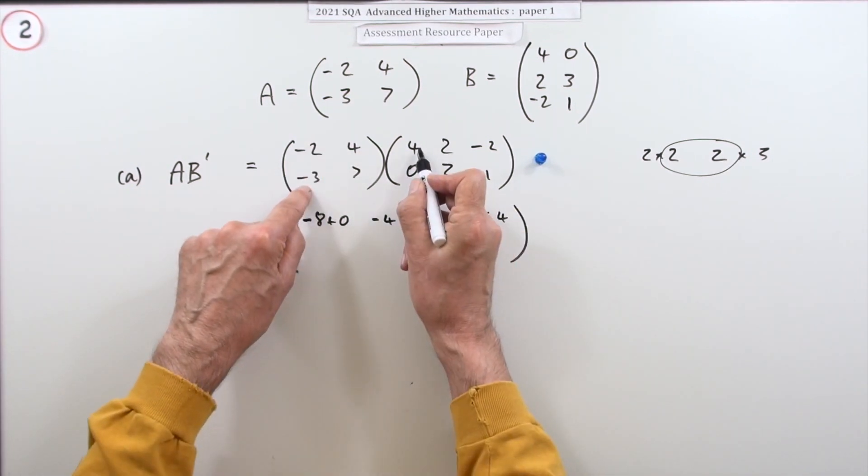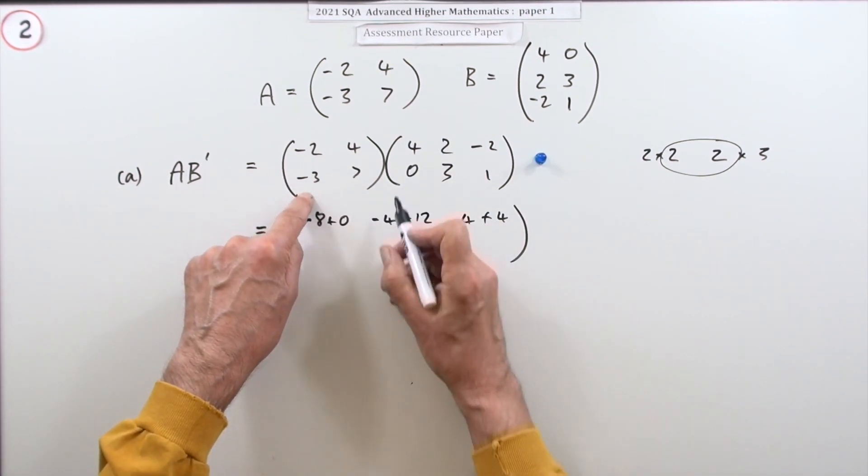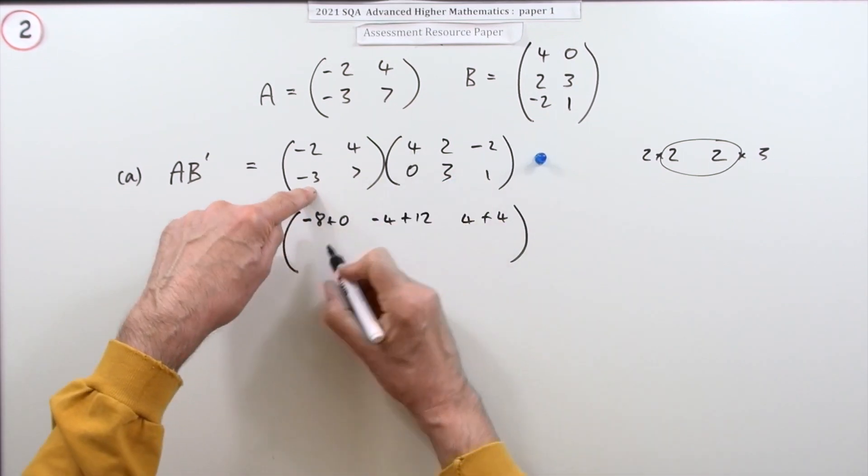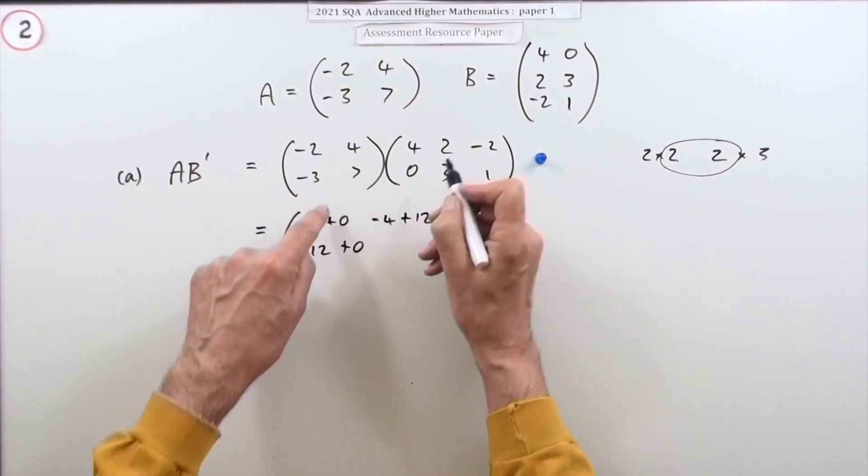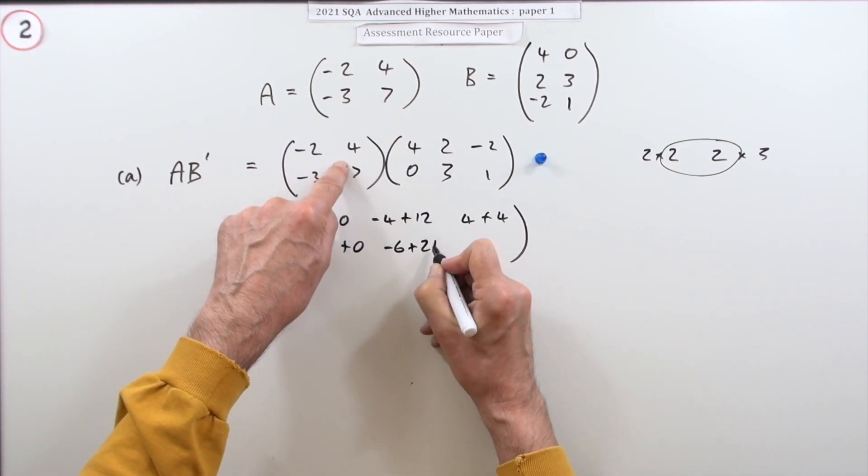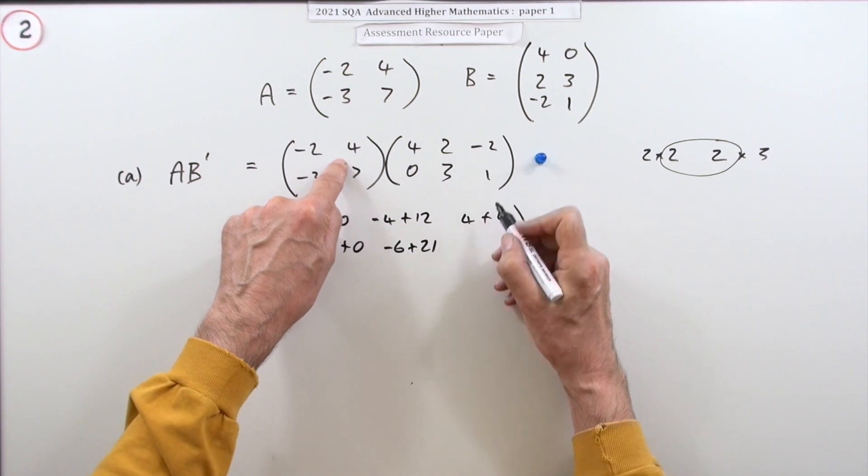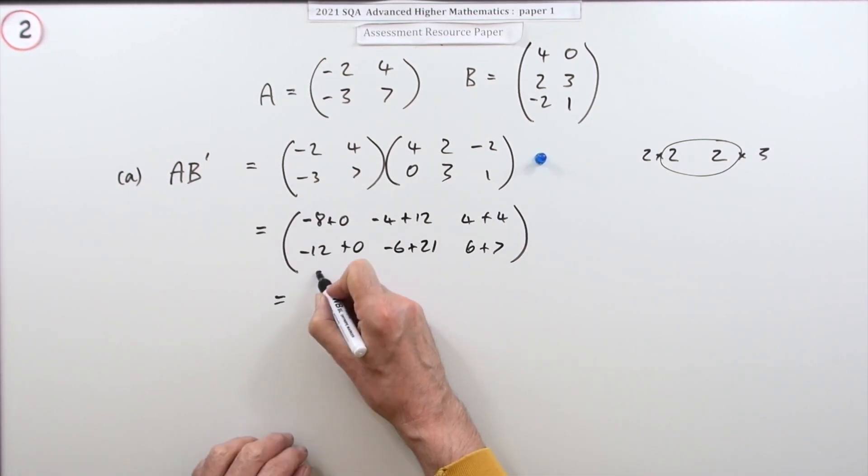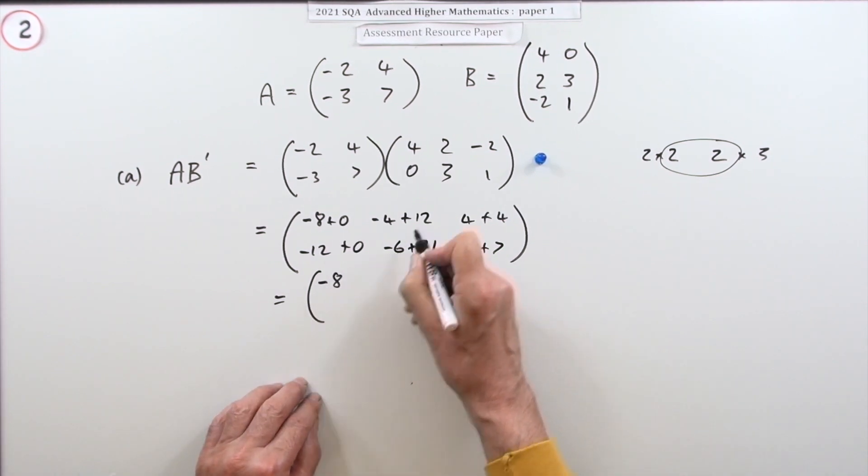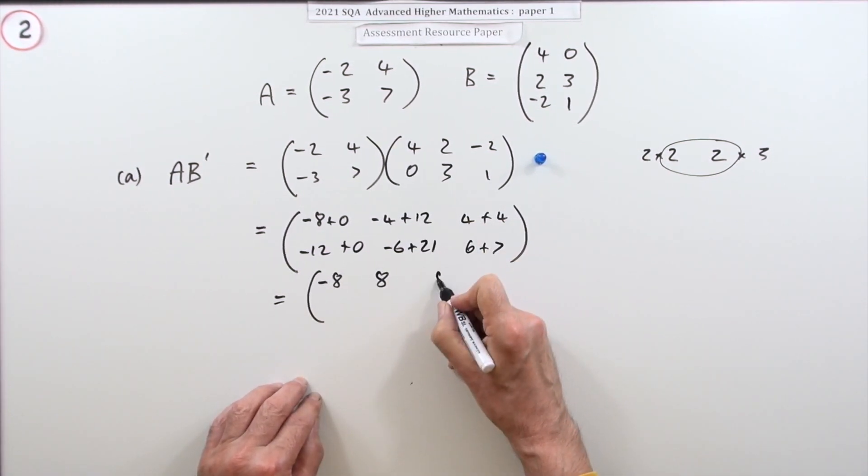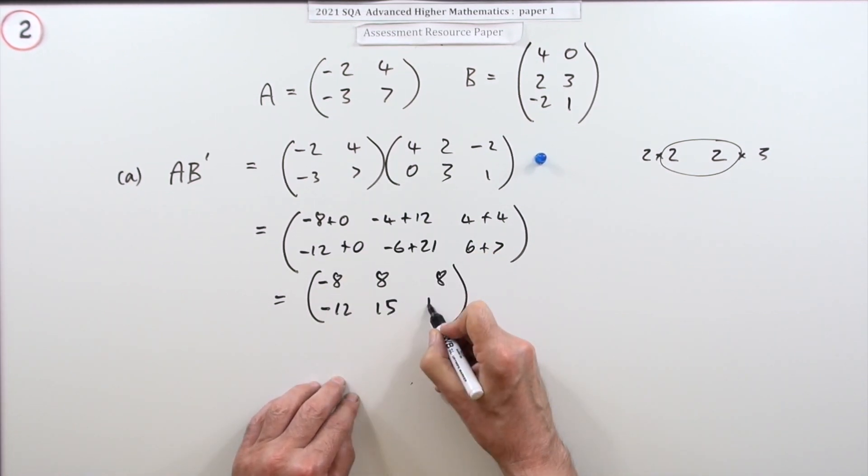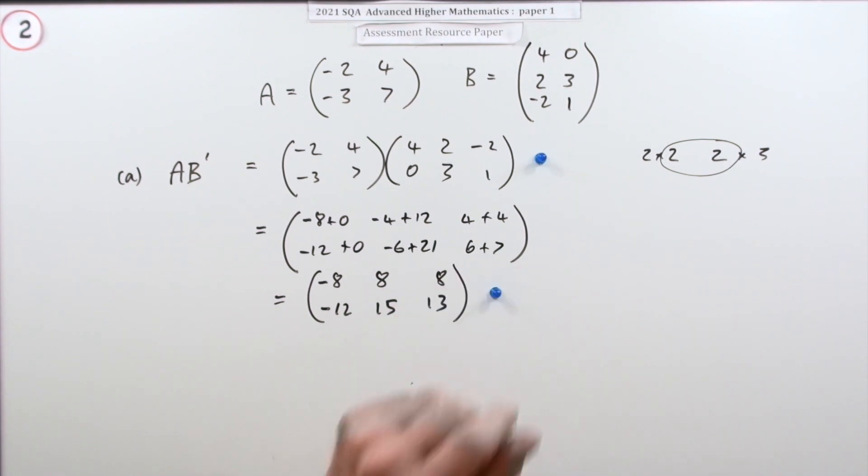Now the second row gives the second row answers: -12 plus 0, -6 plus 21, 6 plus 7. That doesn't get that mark because you could just have gone straight to this. So that's (-8, 8, 8; -12, 15, 13) for that mark.